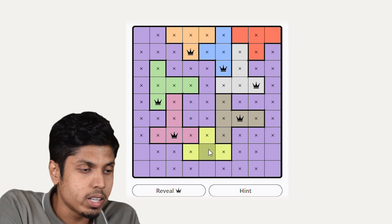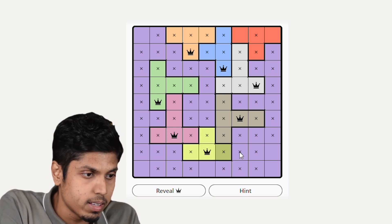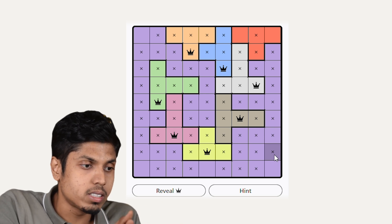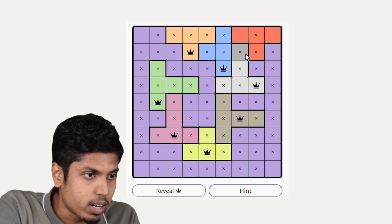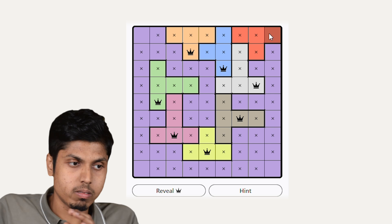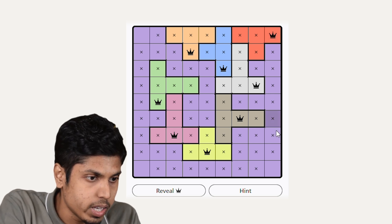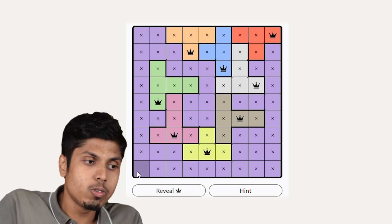And now in the yellow region, we have only one crown possibility, so we will indicate the other squares in the corresponding row and column as abandoned. In the red region, we have only one remaining square. That will be a crown making this cross and cross.